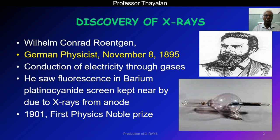He was doing research by studying the conduction of electricity through gases under different pressures. During that, he saw fluorescence in a barium platinum cyanide screen kept near the X-ray tube. The fluorescence was due to invisible rays coming from the anode of the experimental setup. He concluded that these invisible rays are X-rays and confirmed the same by repeating the experiment several times. This is the historic discovery for which Röntgen was awarded the first Physics Nobel Prize in 1901.